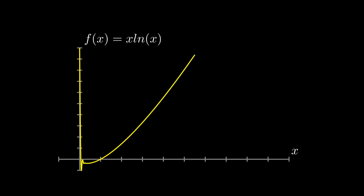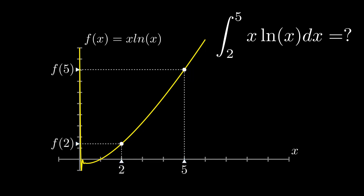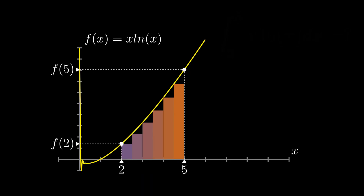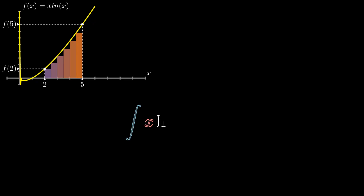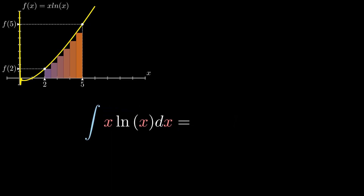This is the curve for x·ln(x). The confined area under the curve from 2 to 5 represents the integration of the function for this limit. We have to use integration by parts to calculate it.